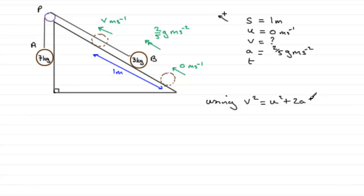So that's what we're going to use then. So to get V, V squared equals U squared, well U is zero so we can leave that out. It's two now multiplied by the acceleration, two-fifths g, multiplied by S which is one. So you're going to get 4g over 5.